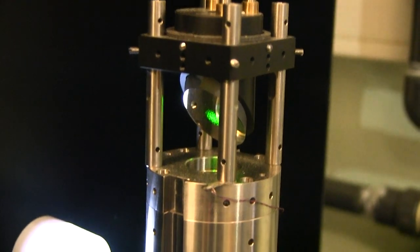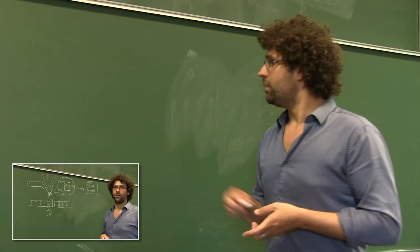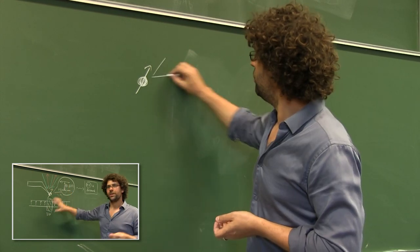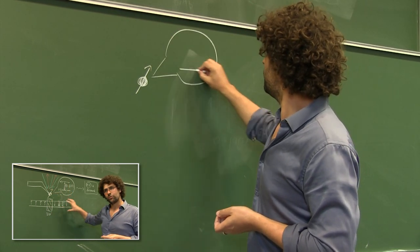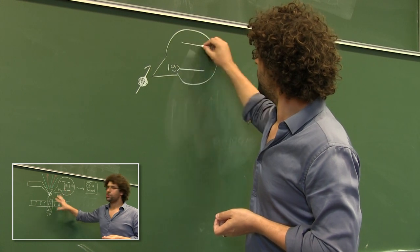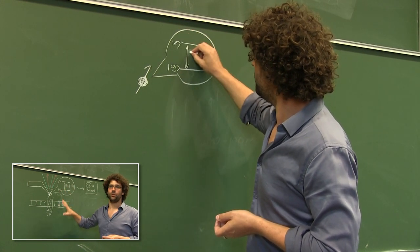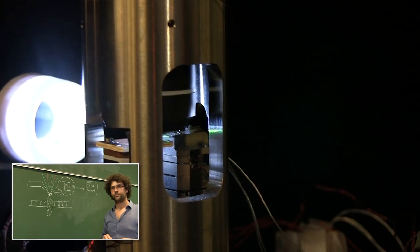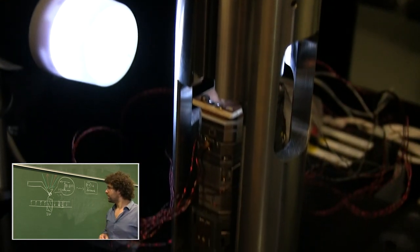If you ever wanted to measure a magnetic field at the nanoscale, you'd need something that is as wide as a few nanometers, like an atom for example. The energy level of an atom is proportionate to the magnetic field that this atom is subject to. So if you can find the energy level of a single atom, then you can measure the magnetic field at the scale of the atom, at the nanoscale.